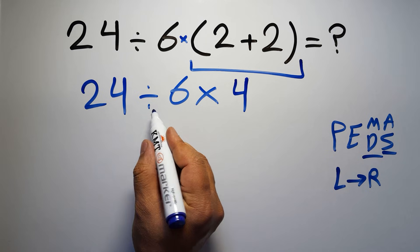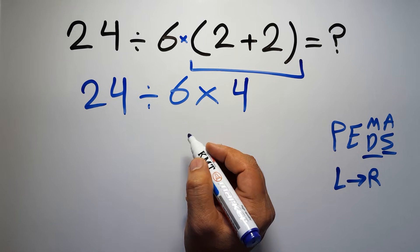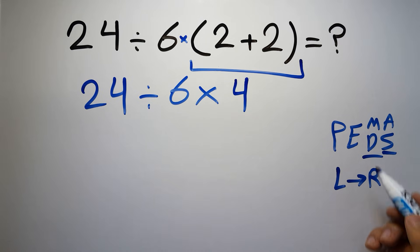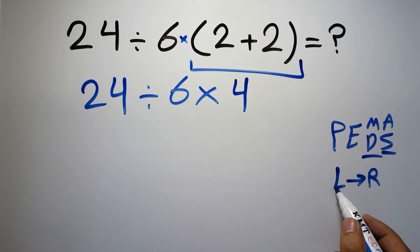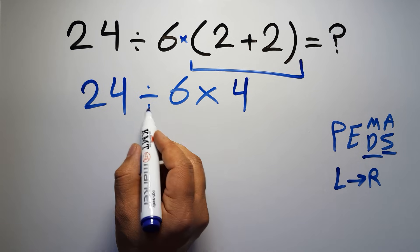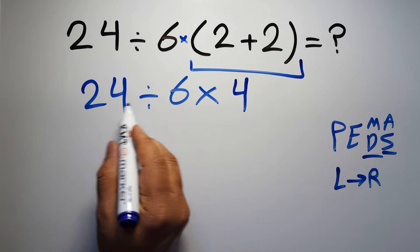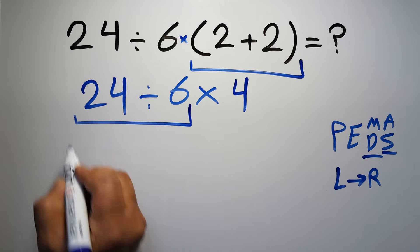Now we have one division and one multiplication. As I said, multiplication and division have equal priority and we have to work from left to right. So here first we have to do this division: 24 divided by 6 equals 4.